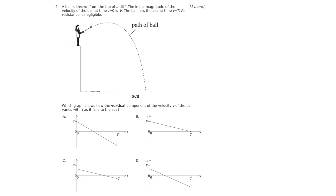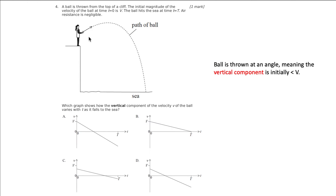Let's think about the vertical velocity of a ball which is thrown at an angle — thrown up and then back down again. Notice the ball is thrown at an angle, meaning that the vertical component is going to be less than the magnitude V. When plotting our graph, we need to make sure it starts at a value less than capital V, because when decomposing our vectors, both Vx and Vy are both going to be smaller than V itself. That leaves us with C and D.